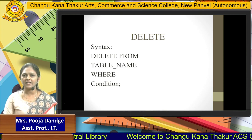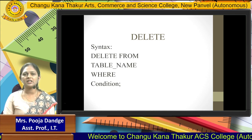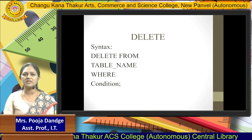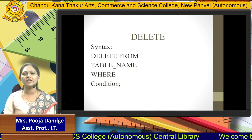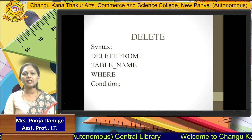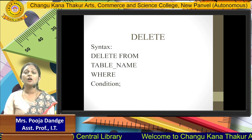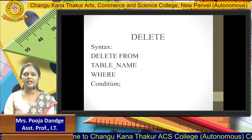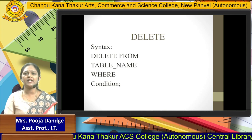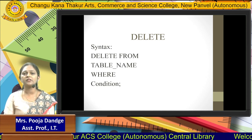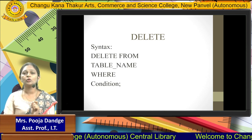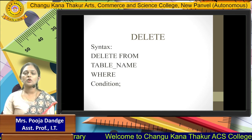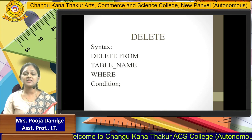The syntax for DELETE is: DELETE FROM table_name WHERE condition. DELETE is the statement, FROM is a keyword, followed by the table name and condition. For example, to delete the student with student_id = 1: DELETE FROM student WHERE student_id = 1. Once executed, that record is permanently deleted from the database.